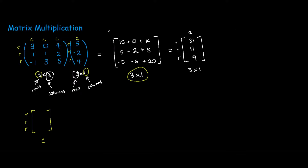And that is your solution to matrix multiplication. I know it's confusing to multiply in this way, as you've never seen problems being multiplied this weirdly in previous subjects until now. But just remember: it's the first row times the column for the first part, the second row times the column for the second part, and the third row times the column for the third part.